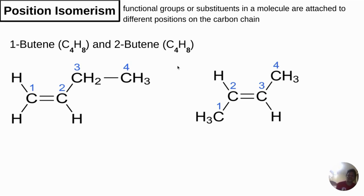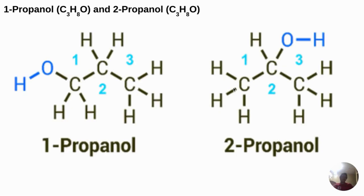Let's try to understand position isomerism. If we are given 1-butene and 2-butene, they have the same molecular formula — four carbons and eight hydrogens — but there is a difference. At carbon 1 we have the alkene functional group in the first compound, while in the second compound the alkene functional group is at carbon 2. Another example: 1-propanol and 2-propanol both have the molecular formula C3H8O, but the OH is found at carbon 1 in the first compound, while the OH is found at carbon 2 in the second.